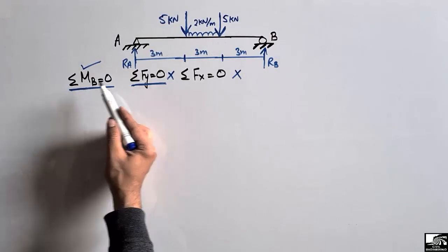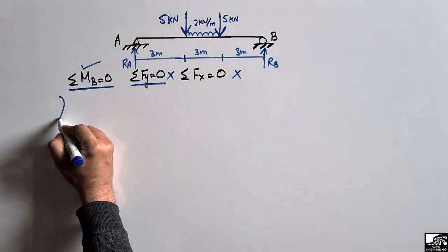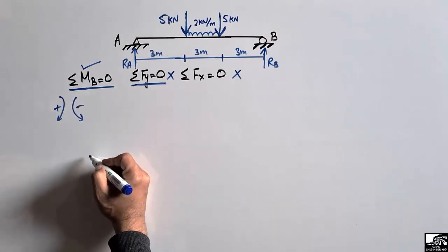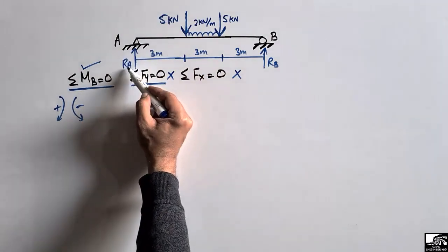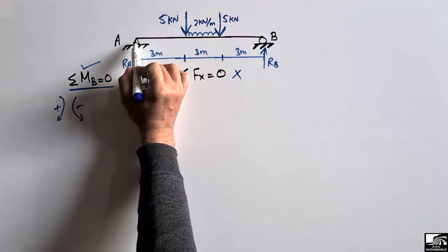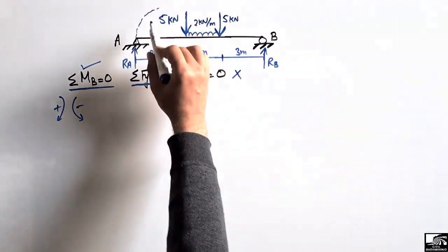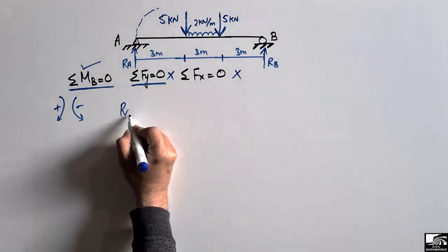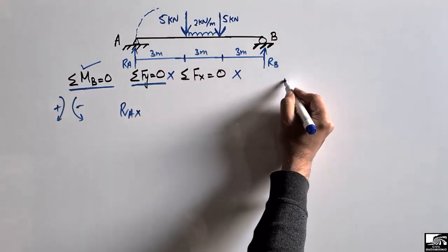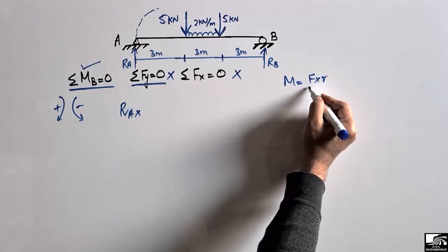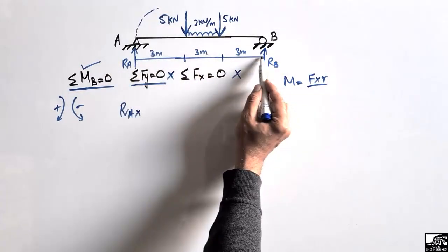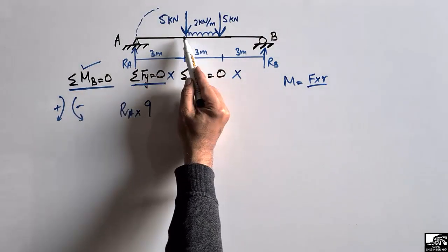Let's take the summation of moments at point B equal to zero, with clockwise moments taken as positive and anti-clockwise moments taken as negative. The reaction Ra will create a clockwise moment about point B, so its moment is Ra multiplied by the moment arm, which is the full beam length of 9 meters.